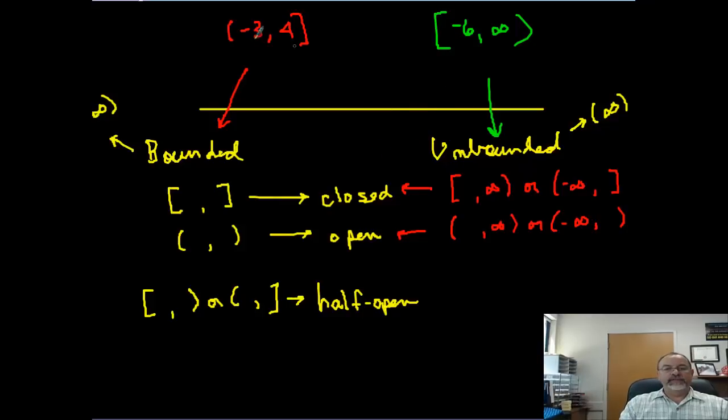Now, these numbers here are the endpoints. Notice here we only have one endpoint. Negative six. Infinity is not an endpoint because endpoint infers or implies that it ends, and infinity never ends. So you only have one endpoint in this scenario.